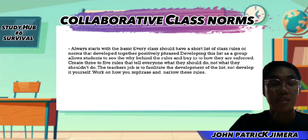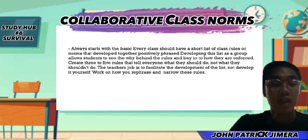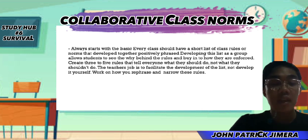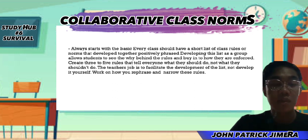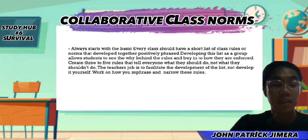Collaborative class norms help everyone reflect on what kind of classroom culture they want. First, guide students toward identifying explicit behavioral expectations that will allow them to be engaged and productive. Press them to get specific — if someone says 'respectfully,' ask for specific behaviors that convey respect or lack of respect.